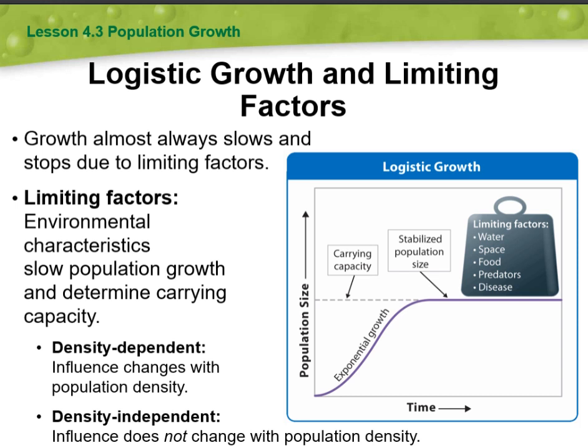On the other hand, density independent factors are not influenced by population density. They affect the population regardless of its size. Examples of density independent factors include natural disasters like hurricanes or floods, temperature extremes, and habitat destruction. These factors can have a significant impact on population size regardless of how densely populated an area is. Understanding the interplay between density dependent and density independent factors helps us comprehend the complex dynamics of populations and how they respond to various environmental conditions.